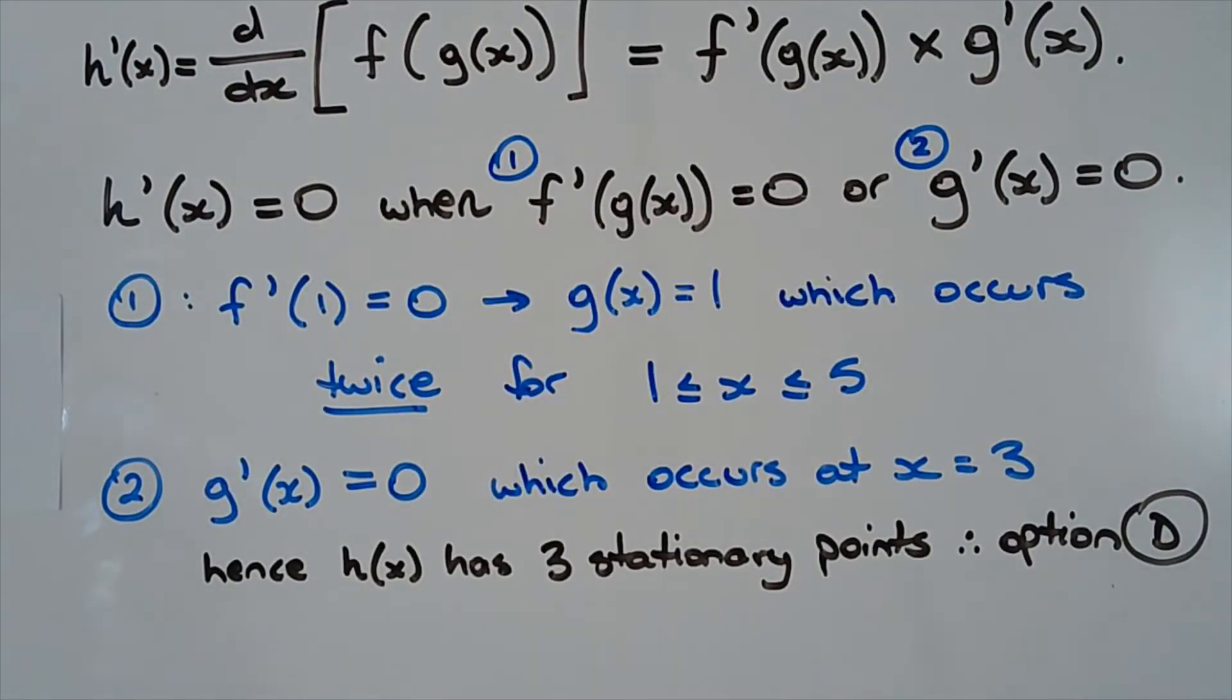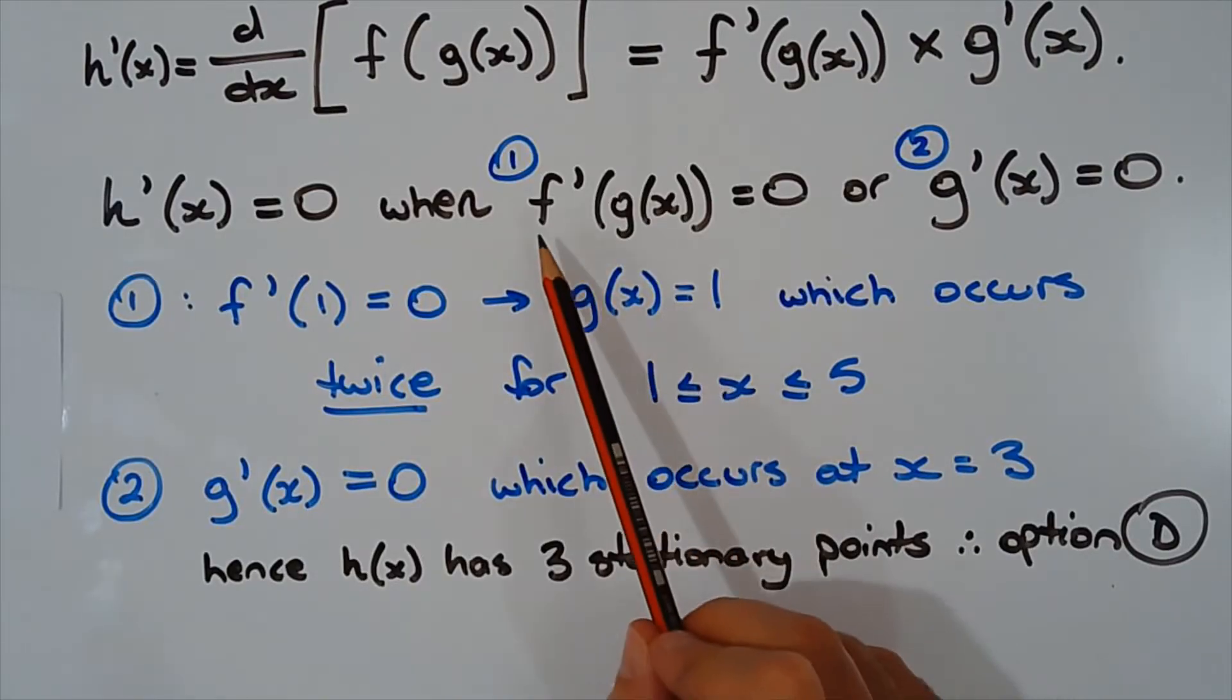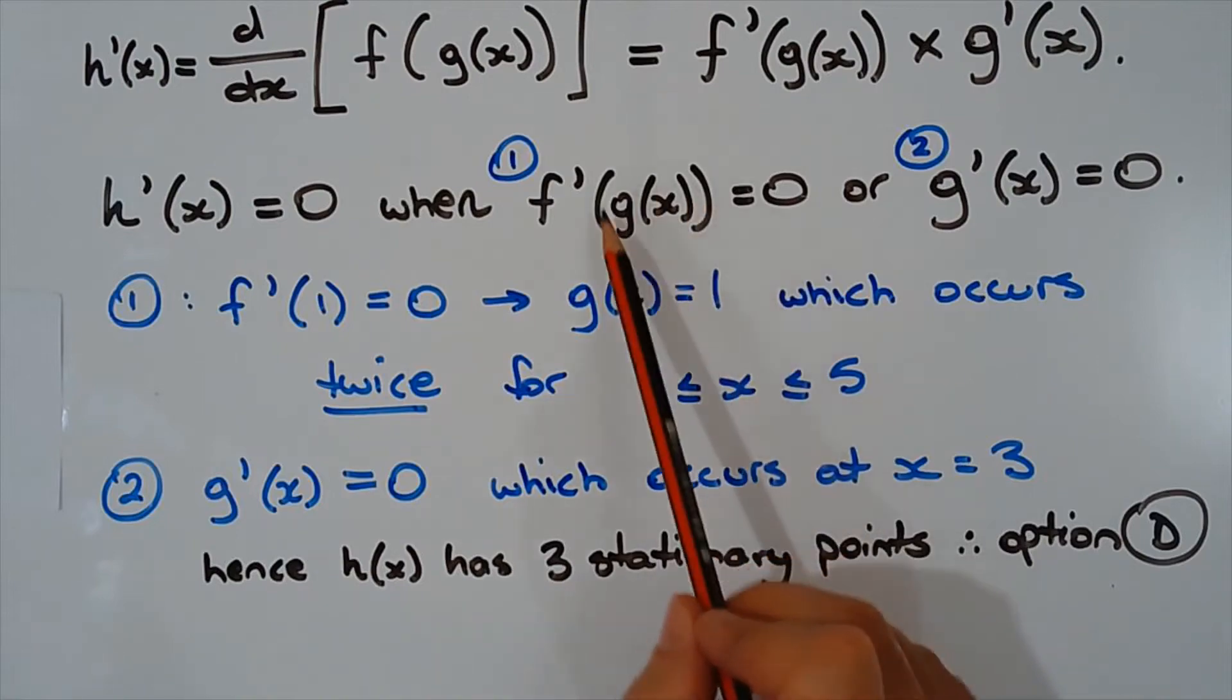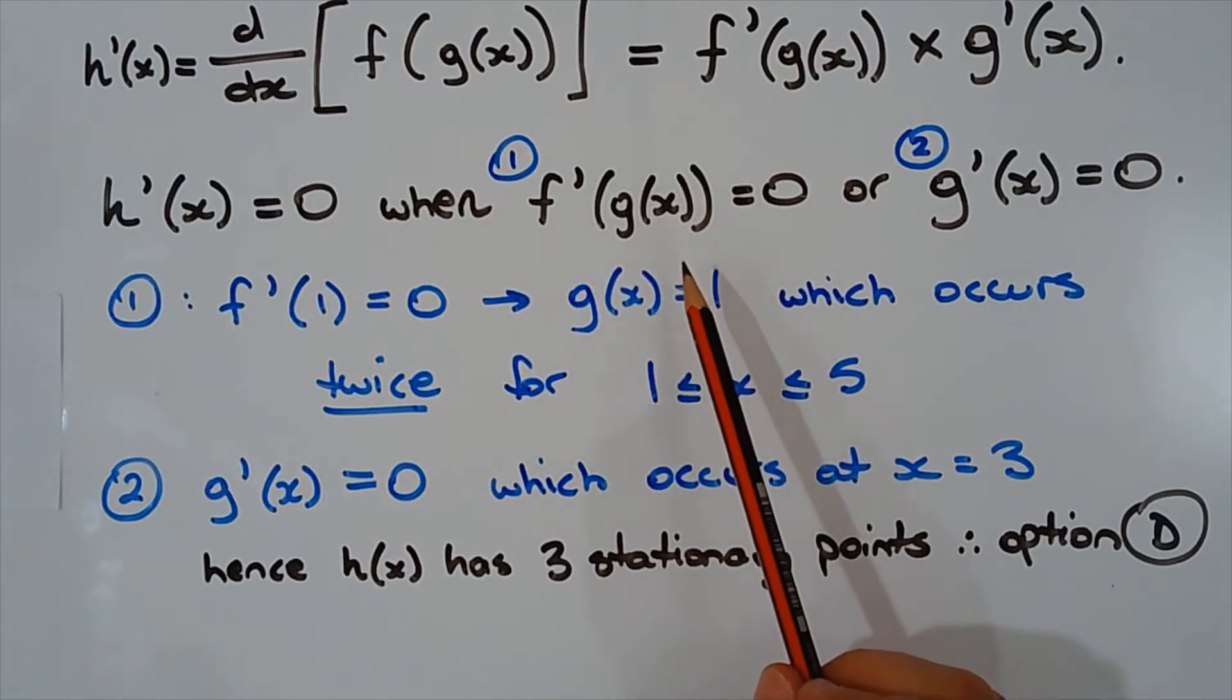Now going back to case 1, f dash of 1 equals 0 implies that g of x must equal 1. After all, it's f dash of g of x equals 0, and g of x must equal 1, since that's where the stationary point occurs.